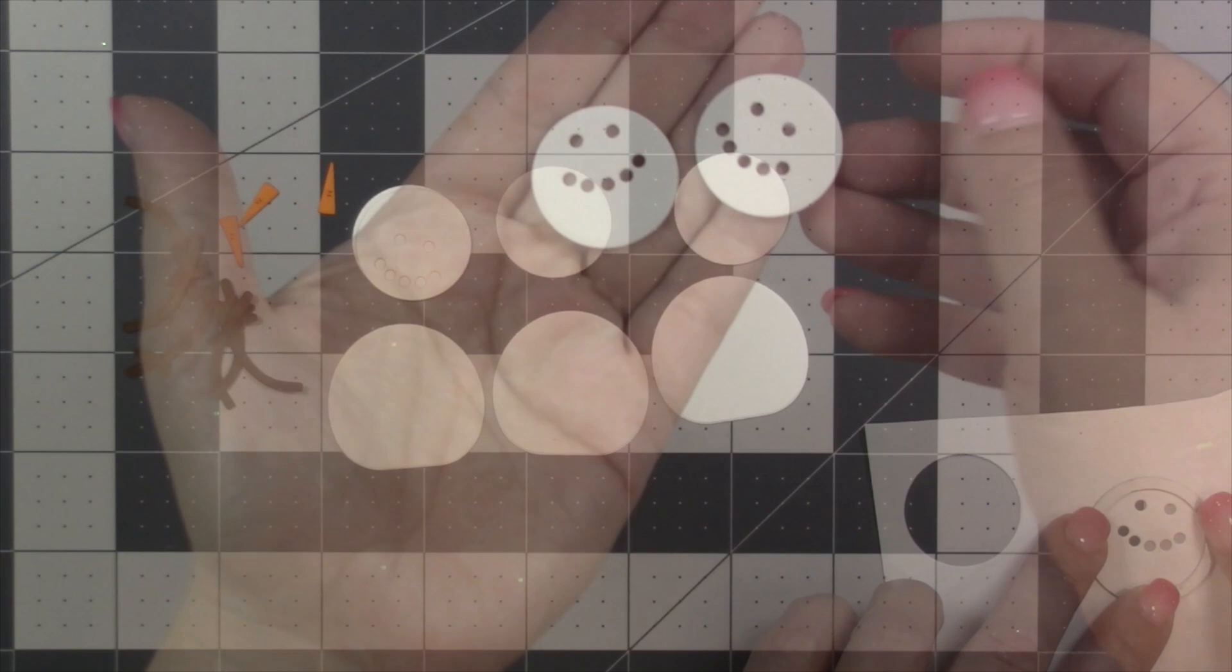By using that technique my other two snowmen have different faces. One is looking up, one is looking to the side.